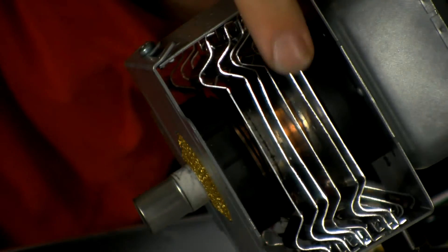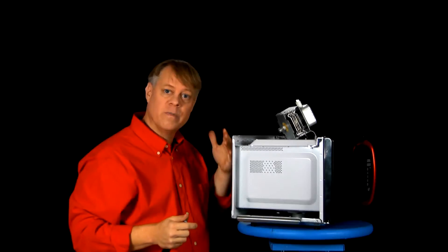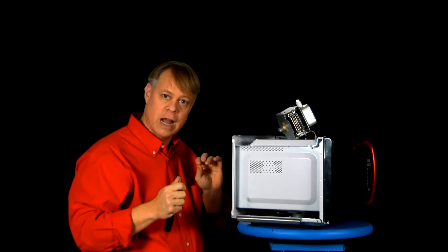The vacuum tube is inside here. These are cooling fins, thin pieces of metal that dissipate the heat as the magnetron operates.